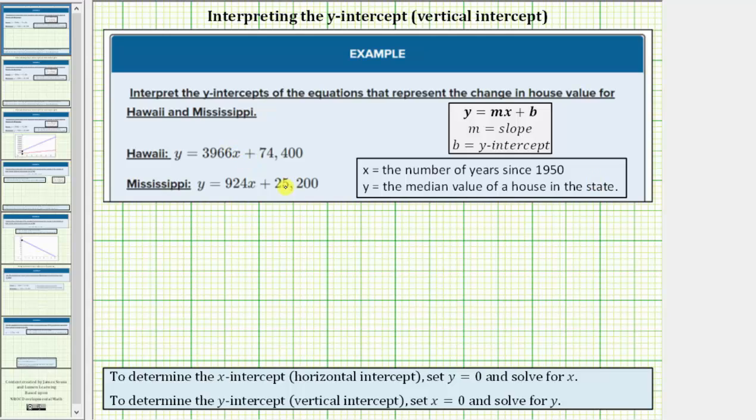Notice how both equations are in slope-intercept form, which is the form y equals mx plus b, where m is the slope, and b is the y-intercept.